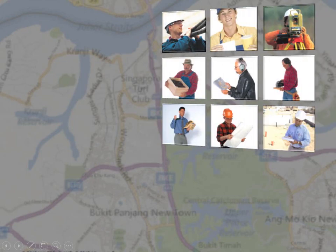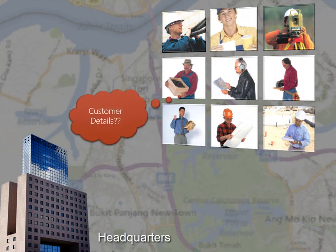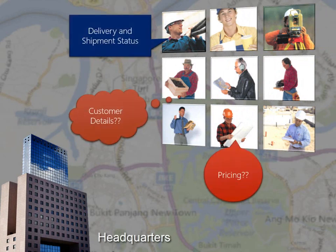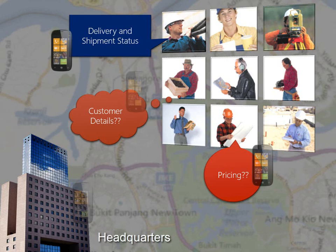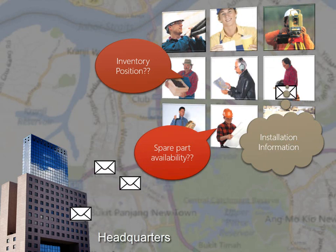Field staff requires a lot of support and data from head office. For example, support engineers need to know the status of complaints, and salespersons need to know the pricing and stock options. That means the field staff needs to call head office repeatedly, or they have to rely on repetitive emails being sent from head office.